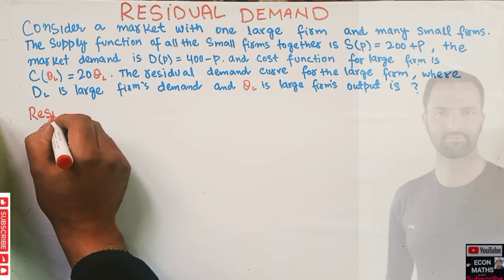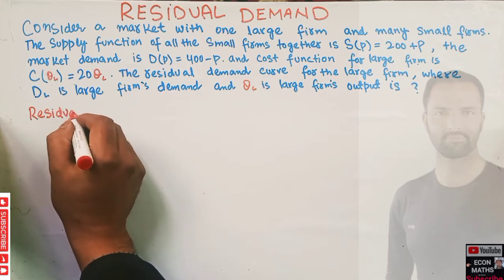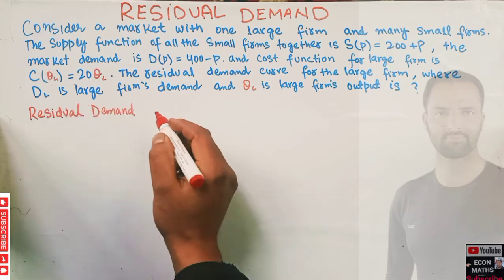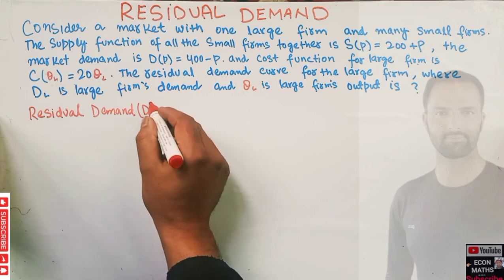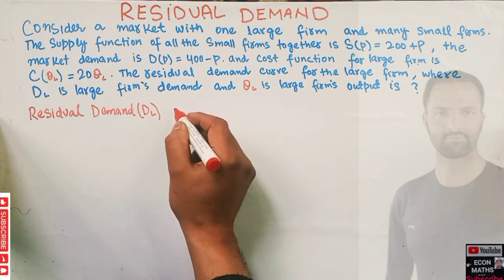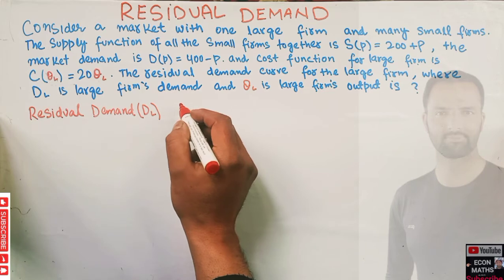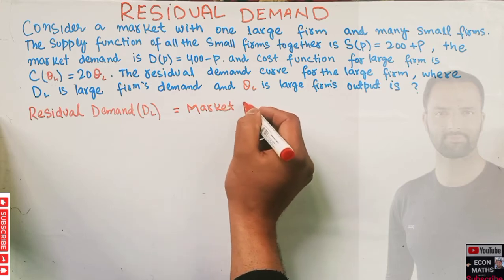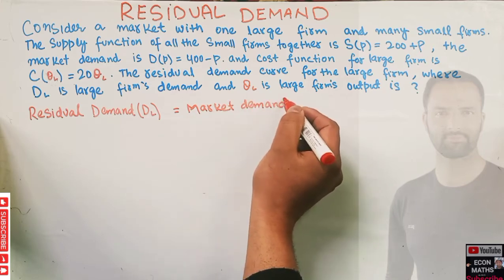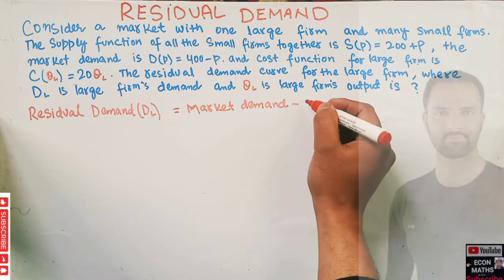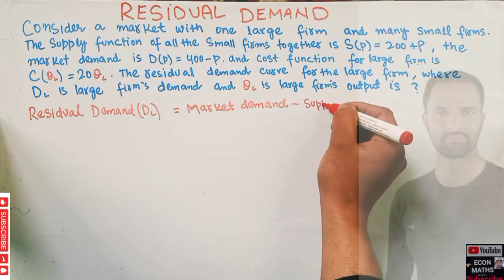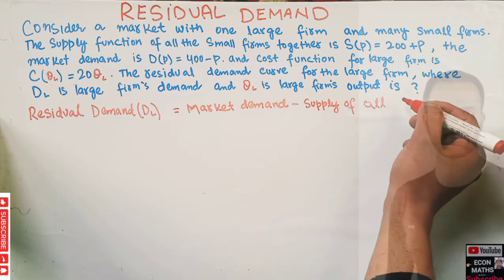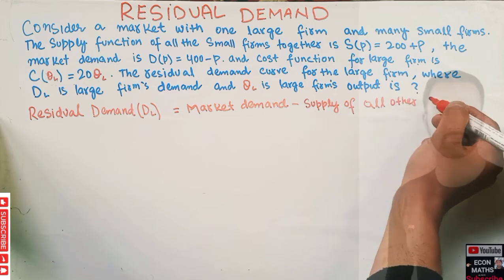The residual demand is defined as: Residual Demand = Market Demand minus the Supply of all other firms.